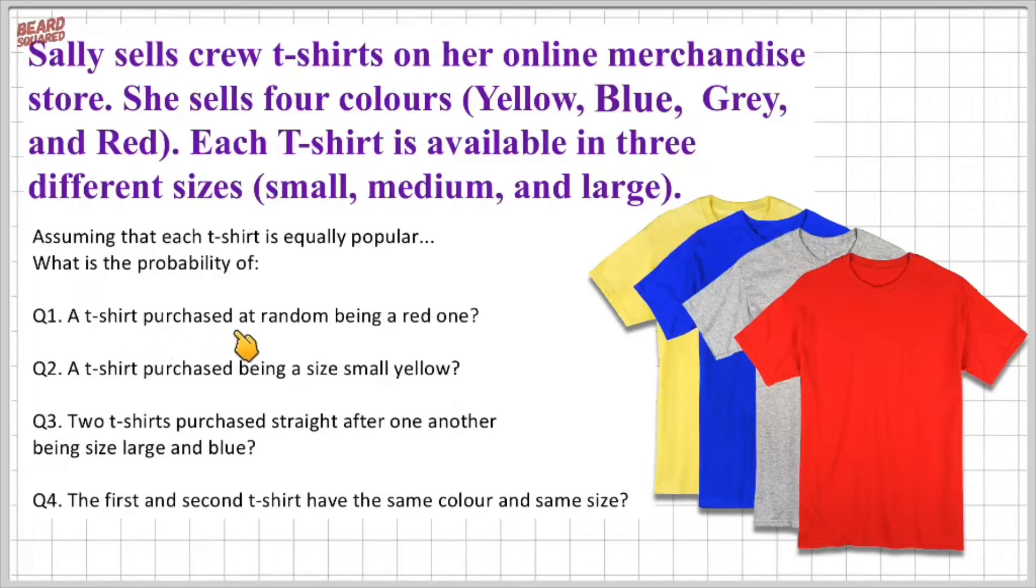So very quickly, question one I've mentioned in the intro. If I want to purchase just a red t-shirt, then because I've got four colors and red is one out of four, the probability is simply just one out of four.